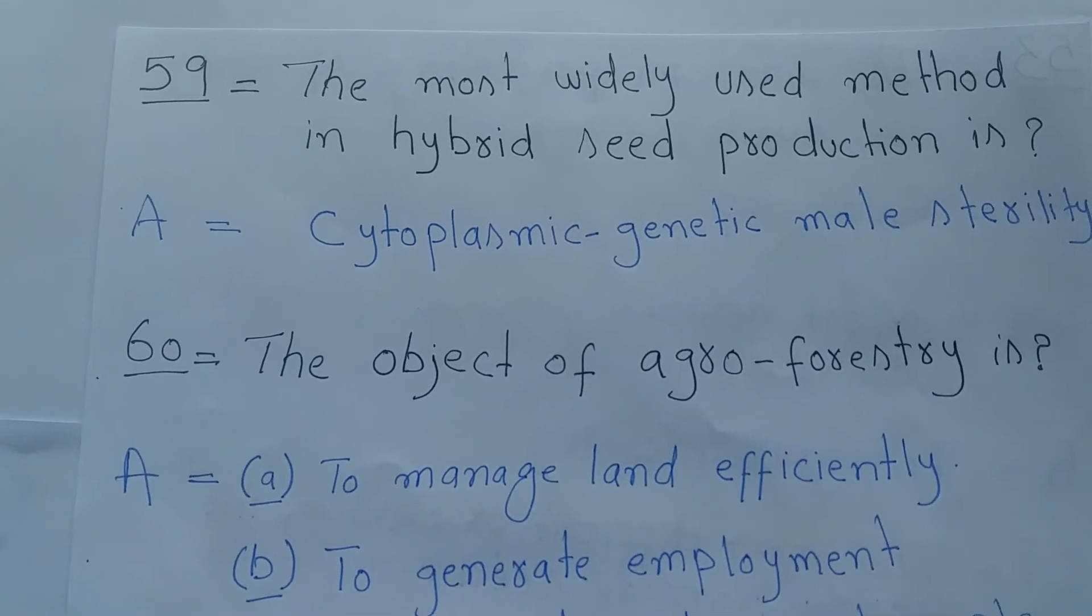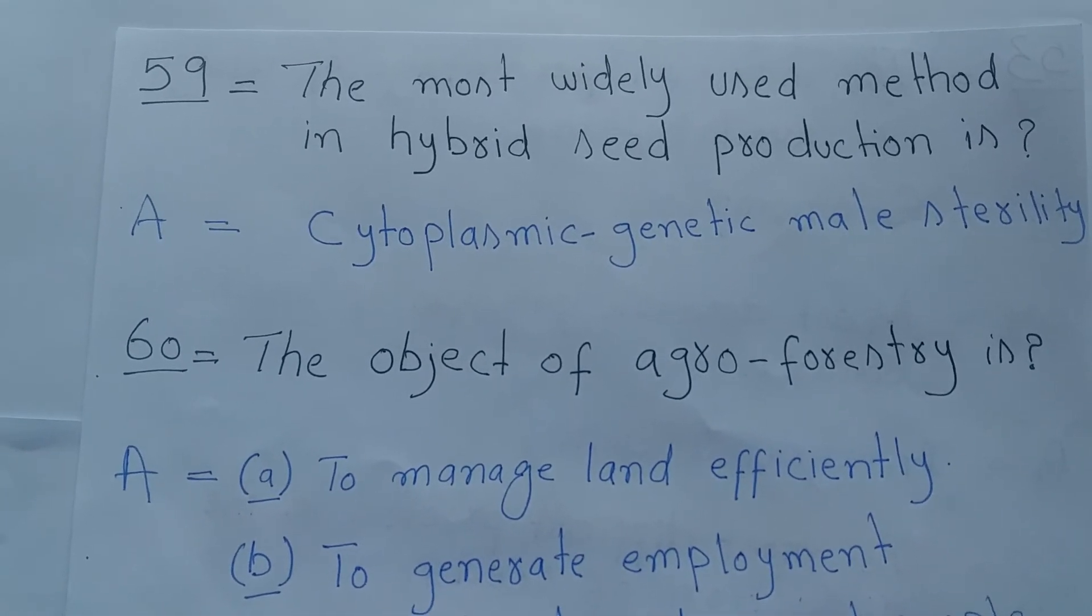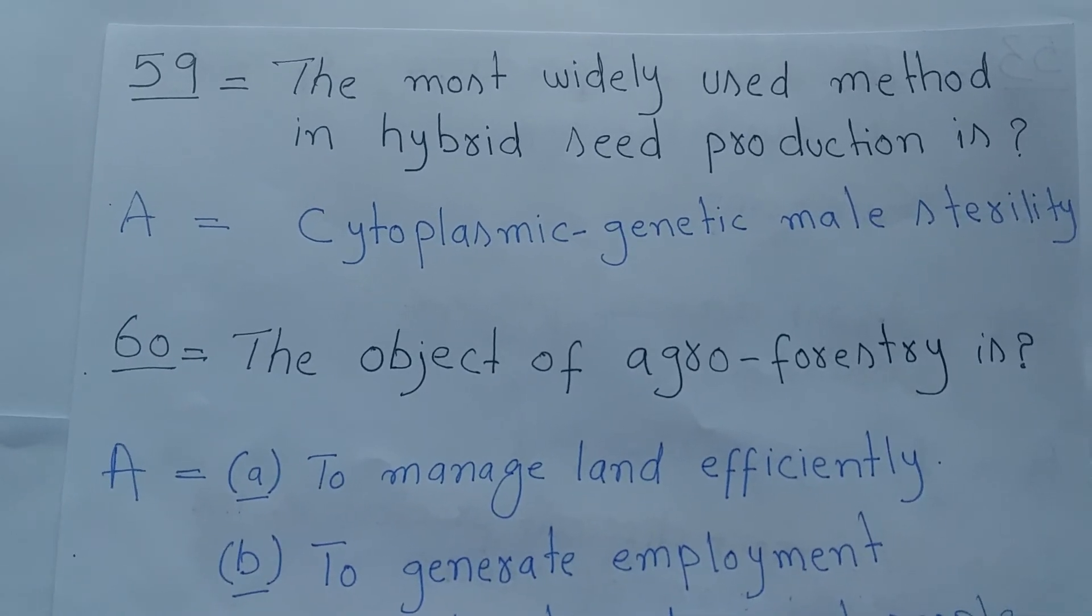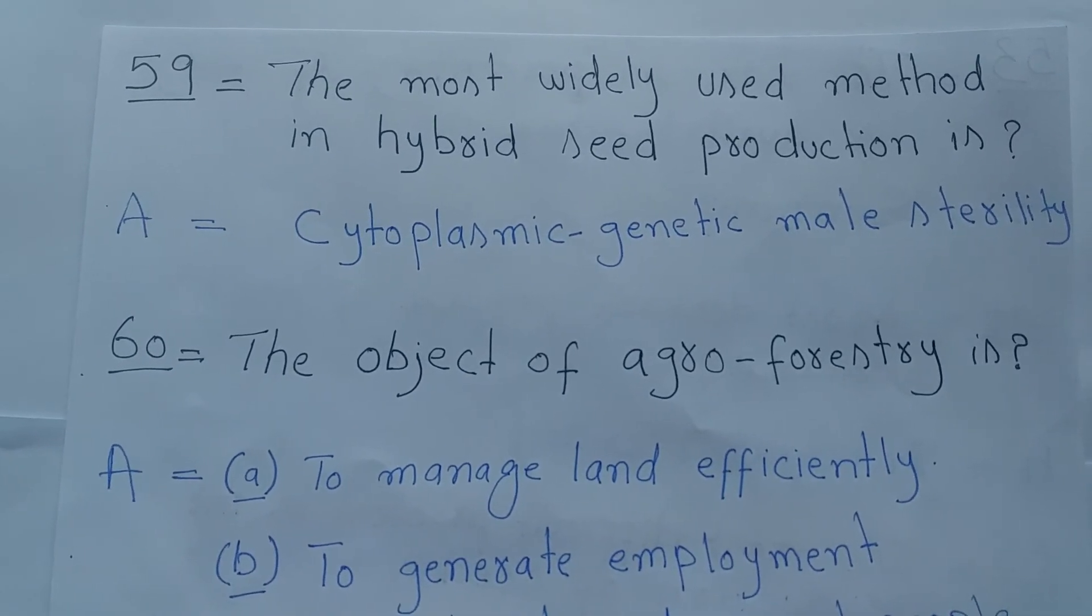Question number 59: The most widely used method in hybrid seed production is? Answer is Cytoplasmic genetic male sterility.